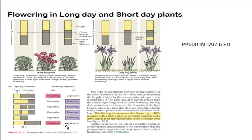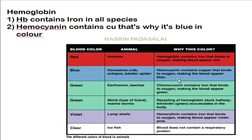For long day plants, flowering occurs under two conditions. First, when the night length is shorter than the critical period, they flower because they need a large amount of sunlight. Second, when we break the night with a night break — a small flash of light during nighttime — that will also make the plant flower. This diagram can be found on page 600 of your textbook, sixth edition.